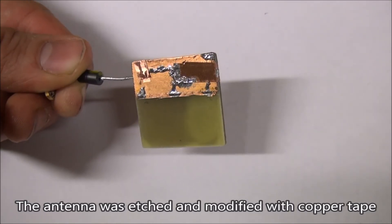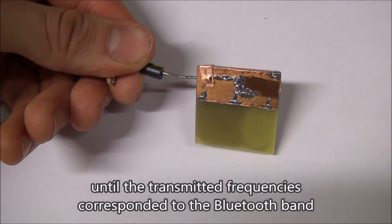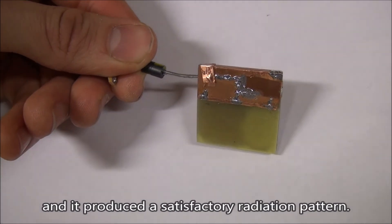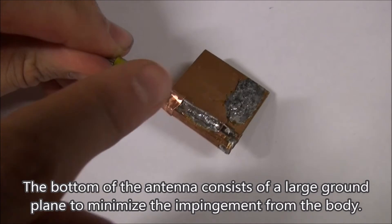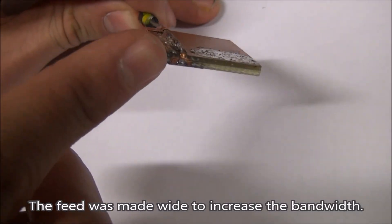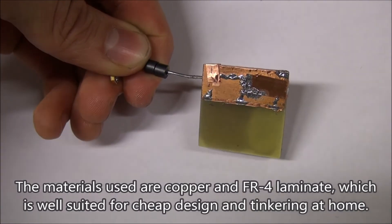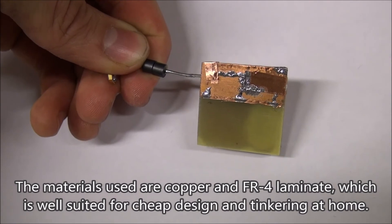The antenna was etched and modified with copper tape until the transmitted frequencies corresponded to the Bluetooth band and it produced a satisfactory radiation pattern. The bottom of the antenna consists of a large ground plane to minimize the impingement from the body. The feed was made wide to increase the bandwidth. The materials used are copper and FR4 laminate, which is well suited for cheap design and tinkering at home.